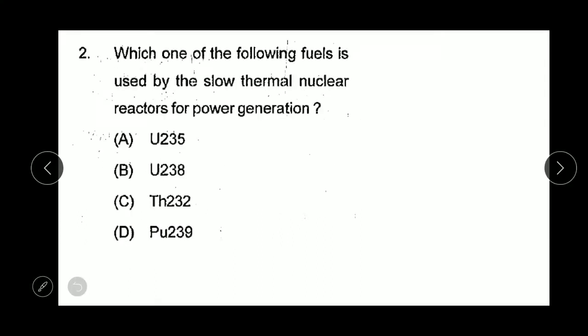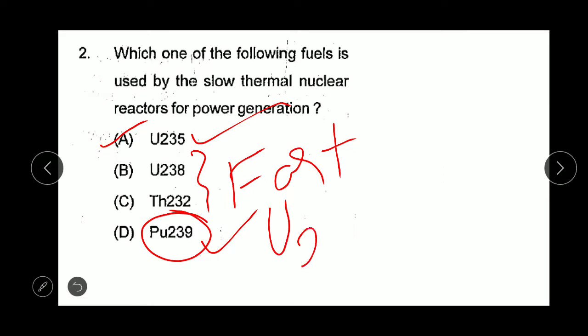Next question: which one of the following fuel is used by the slow thermal nuclear reactor for power generation? For slow reactors, uranium-235 can be used. These two, uranium-238 and thorium-232, are for fast reactors. Uranium-233 is also used for slow. The most accurate answer will be uranium-235.